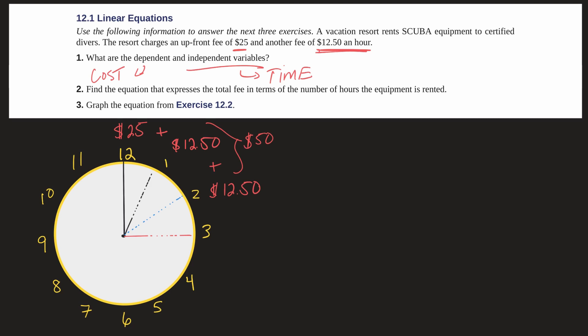So number two, find the equation that expresses the total fee in terms of the number of hours the equipment is rented. Well we just put everything we have up here into a little equation. So our cost or fee, I'll call it cost, equals $25 up front plus $12.50 per hour which we can write as x. Now if you remember this is basically the slope intercept form of a line. So remember that's y equals mx plus b.